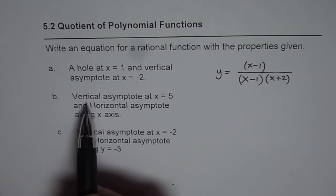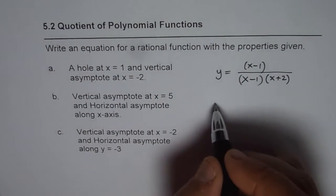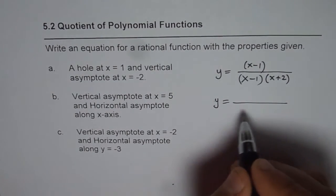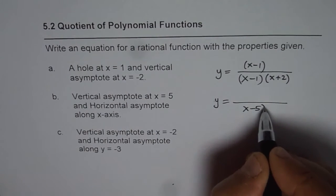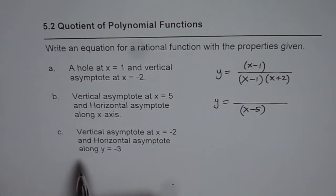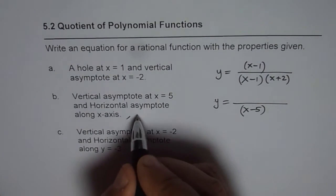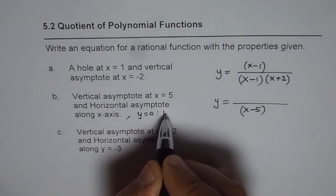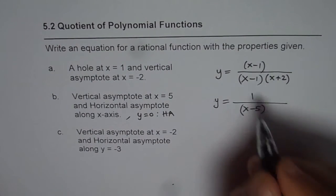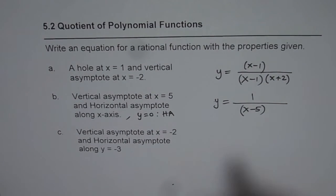Next one. Vertical asymptote at x equals 5. That means the factor is x minus 5 in the denominator. Horizontal asymptote along x axis, along x axis means y equals 0 is your horizontal asymptote. So, degree of numerator should be 1 less. Let me just write 1 here. So, the degree is 0 and 1. That satisfies.